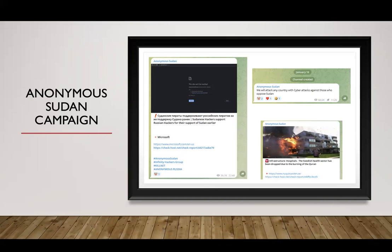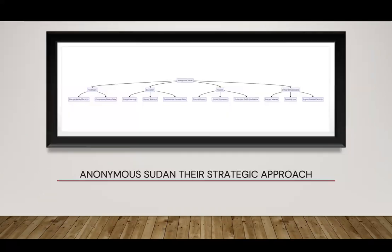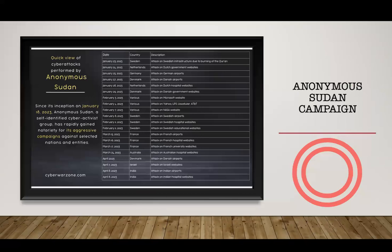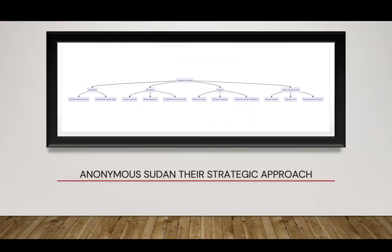The affected Swedish websites spanned a diverse range of sectors — governmental institutions, military, education, banking, and airports. Anonymous Sudan's campaign was particularly important because it gave us clues about how aggressive they were. They attacked so many countries and organizations. It shows the strategic approach in cyber warfare has changed.